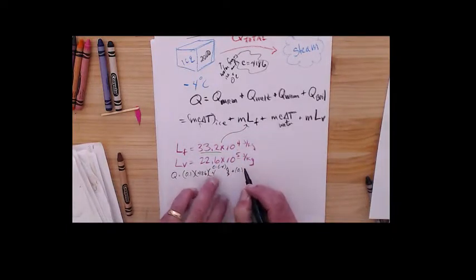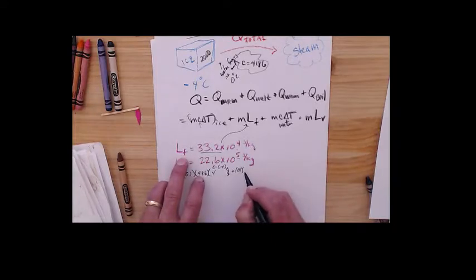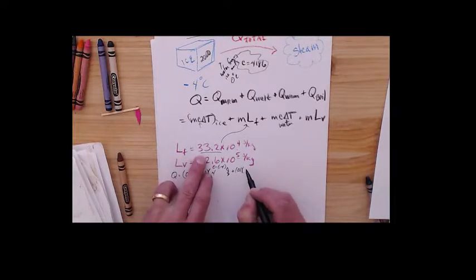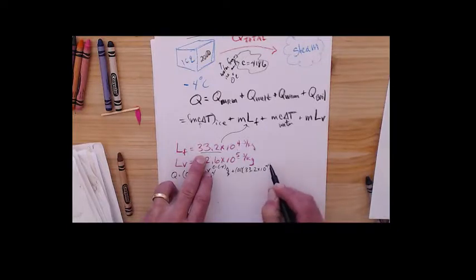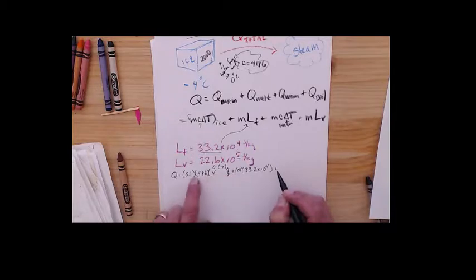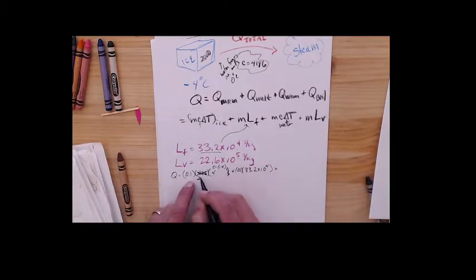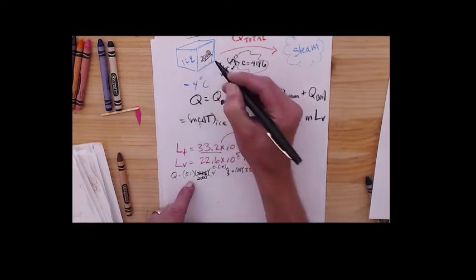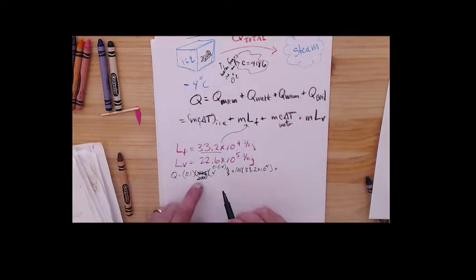So I've got 0.1 times LF, 33.2 times 10 to the 4th. And now I've got, oh wait, this is ice. Ah-ha. The specific heat of ice is 2000, it's not 4186.